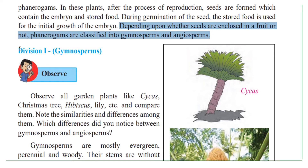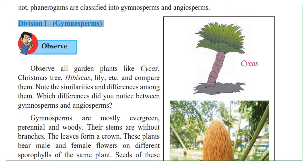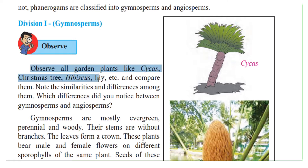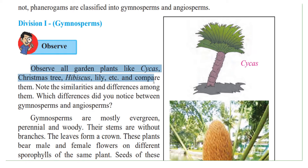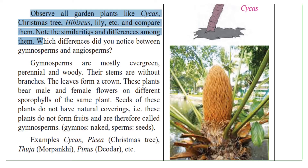Division 1 is gymnosperms. Observe garden plants like cycas, Christmas tree, hibiscus, lily, etc., and compare them. Note the similarities and differences among them — what are the things that are similar and what are the things that are different?